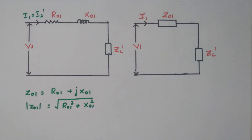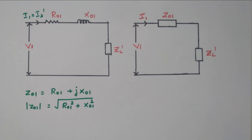In this video we discussed the equivalent circuit of a transformer: all secondary side parameters are transferred to the primary, the equivalent equations are framed, and finally we obtained a very simplified equivalent circuit. Subscribe the channel for more videos and notification. The soft copy of this material is available in the drive; the link is given in the description box. Thank you for listening.